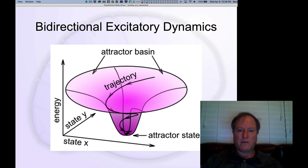Next we're going to start talking about bidirectional excitatory dynamics. What happens when neurons start talking in both directions, when they receive information as well as send information to other neurons.